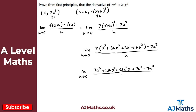Dividing top and bottom by h: 21hx² over h gives 21x², 21h²x over h gives 21hx, and 7h³ over h gives 7h². So we have the limit as h tends to zero of 21x² plus 21hx plus 7h².